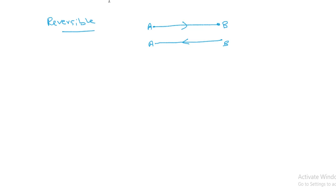If some heat is absorbed during the forward process A to B, then during the reverse process B to A, that same amount of heat should be given out. If a process behaves in this manner, it is a reversible process.